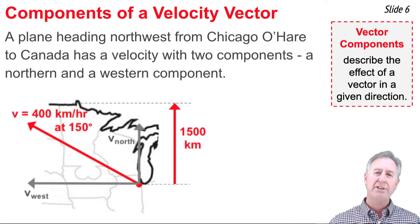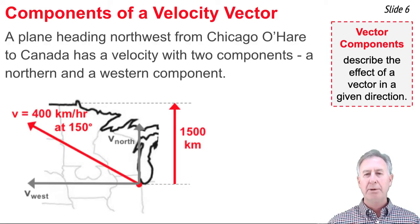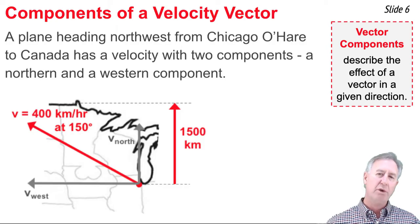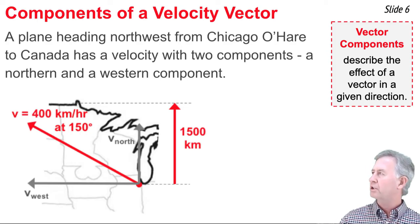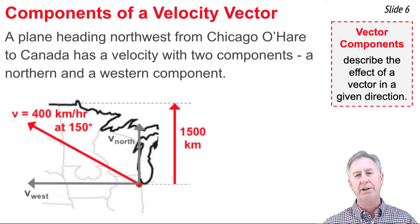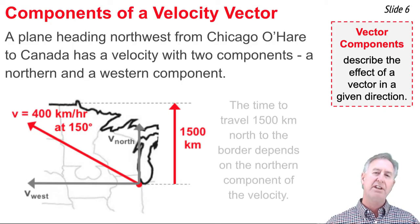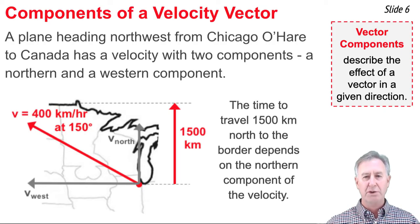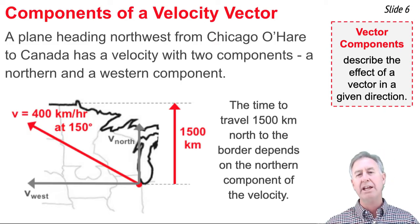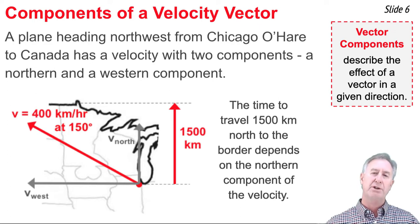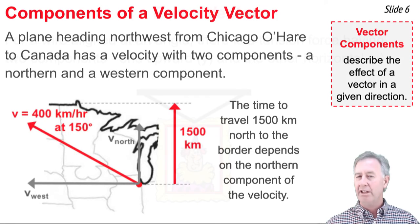And as a second example, let's consider an airplane that is flying from Chicago O'Hare towards the Canada border. But it's flying northwest. And because it's flying northwest, it has a velocity with two components. It has a western component, and it has a northern component. The distance to the border, straight north, is 1,500 kilometers. And it's the northern component of the velocity that describes how fast it heads northward. It describes the effect in the northerly direction. So the time it takes to travel to that border, 1,500 kilometers north of Chicago, depends upon this northerly component of the velocity vector.